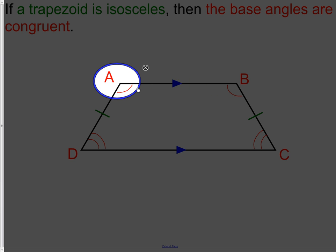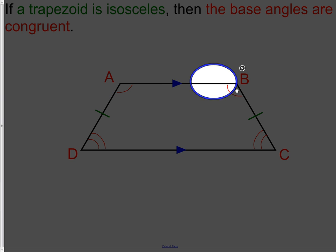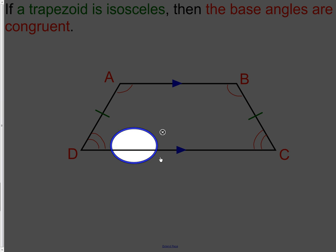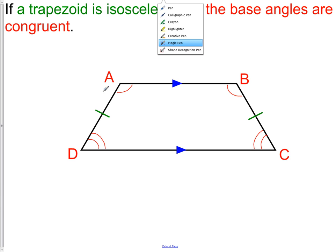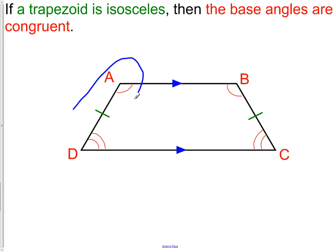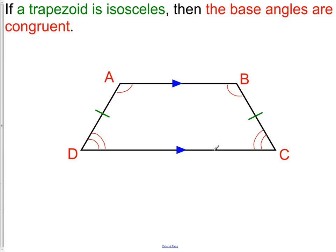When we talk about base angles, we talk about the base angles that are on the same parallel line. Also, angle D is congruent to angle C, so the other two base angles are congruent. Be careful that you don't use the two angles that are on the congruent side. Angle A and D are not equal to each other — they are not congruent. A and B are congruent, D and C are congruent, but not AD and not BC.